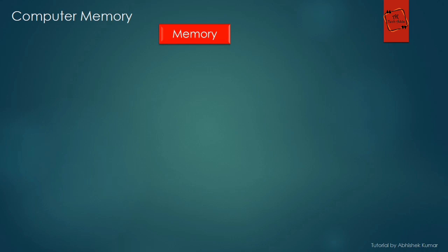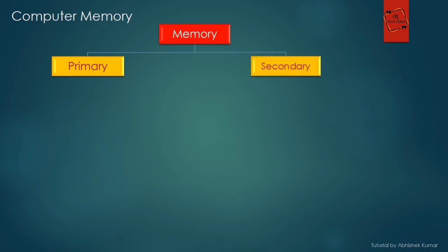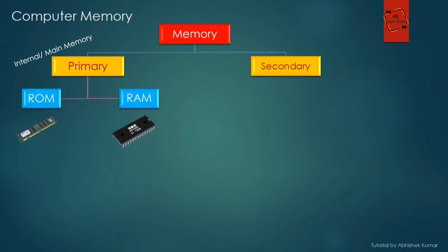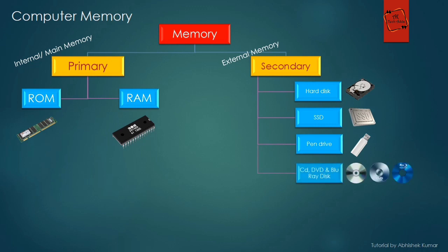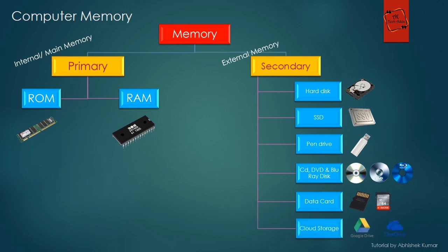Now we'll talk about kinds of memory. A computer has two kinds of memory: number one, primary memory, and number two, secondary memory. Primary memory is also called internal memory — it is the main memory of the computer, and it is of two types: RAM and ROM. Secondary memory is also known as external memory, and it stores information or any data permanently.